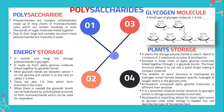In terms of energy storage, in animals and fungi the storage polysaccharide is glycogen, which is made up of alpha glucose molecules linked together by glycosidic bonds. Most glycosidic bonds are between carbon 1 of one glucose and carbon 4 of the next — so-called 1-4 links. There are also 1-6 links which form branches in the chain. When needed, the glycosidic bonds can be broken by carbohydrase enzymes to release monosaccharides for respiration.